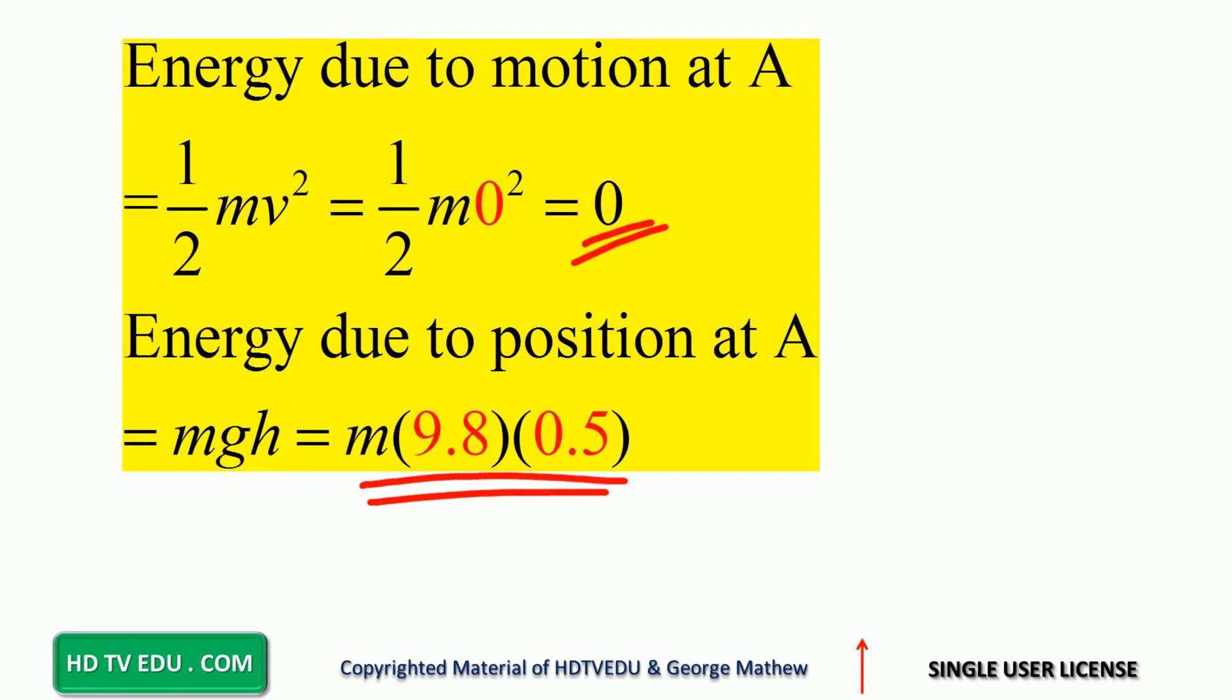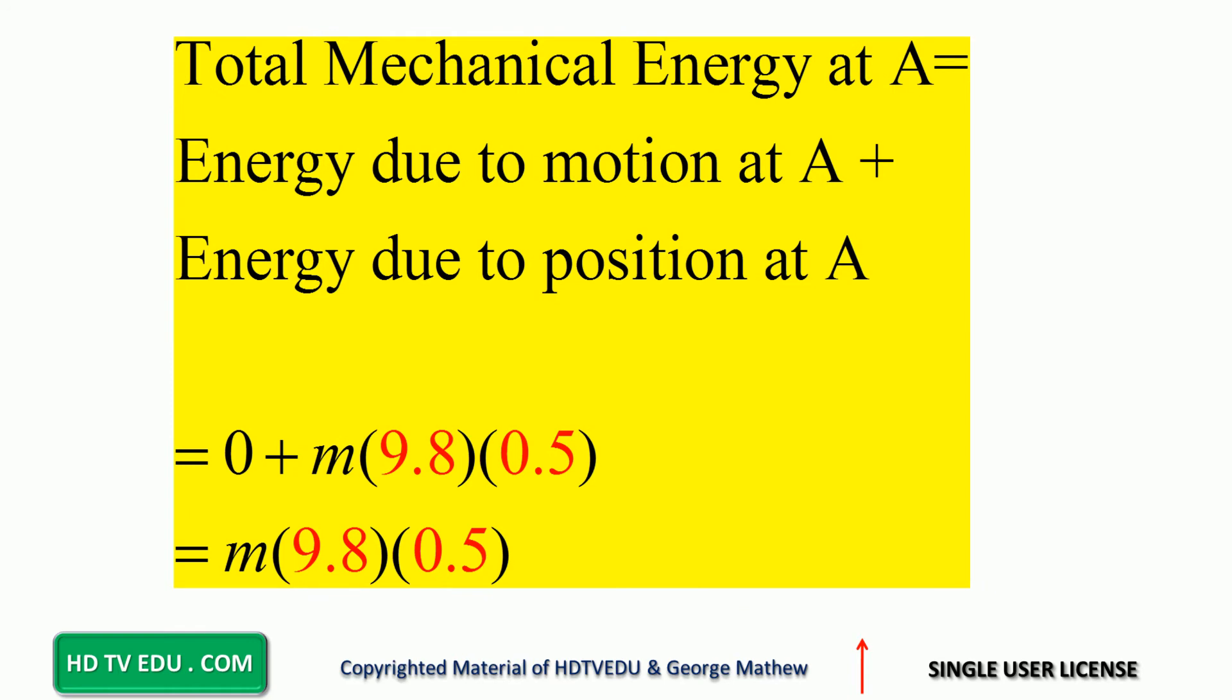So we get this, M times 9.8 times 0.5. So when we add zero to M times 9.8 times 0.5, we get M times 9.8 times 0.5.